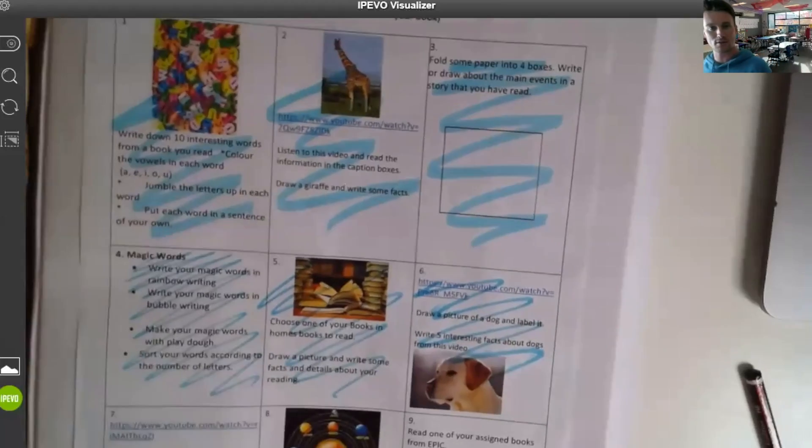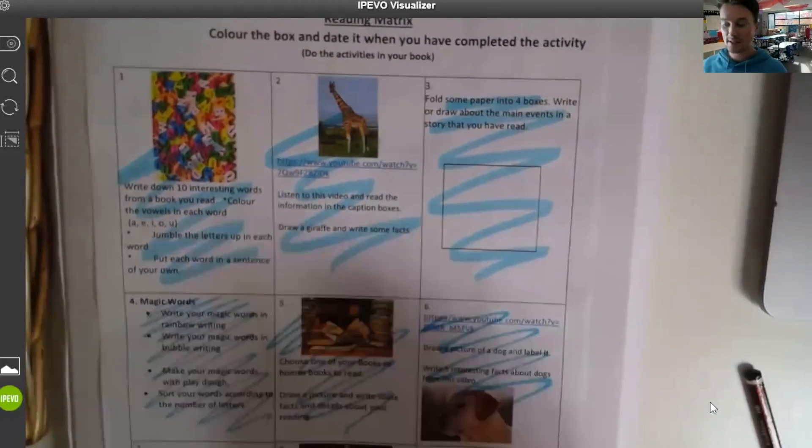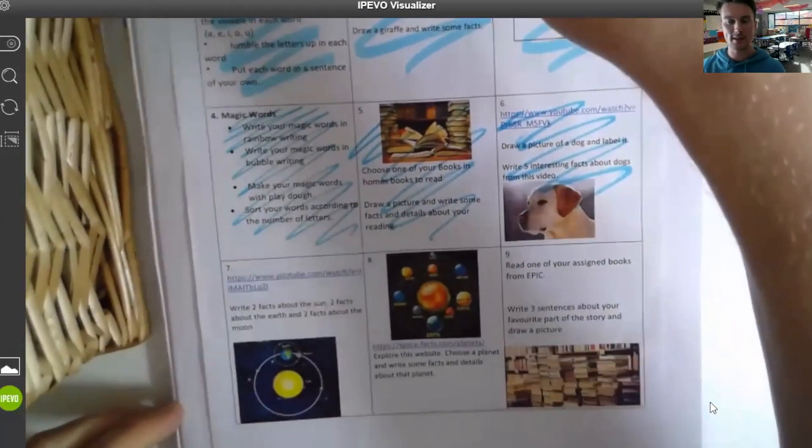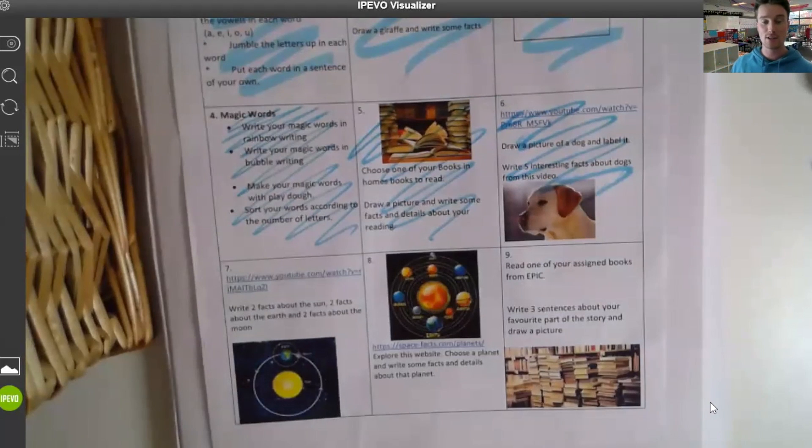Hello Junior Learning House. So today we're doing one of our matrix squares and we're doing reading. So I've got my reading matrix here, I know, because it says reading at the top.